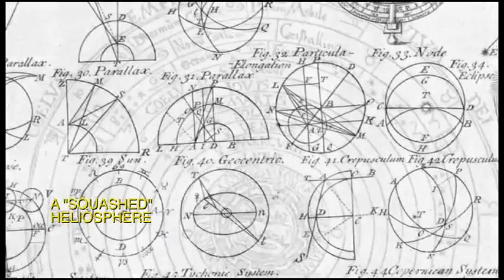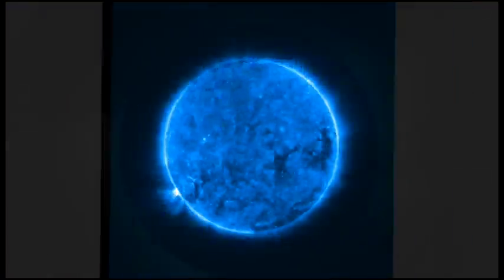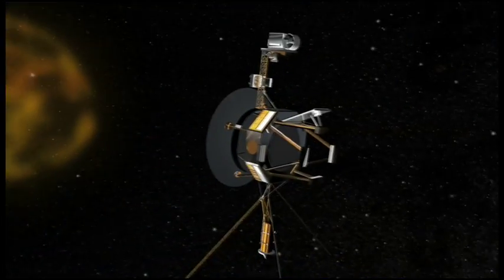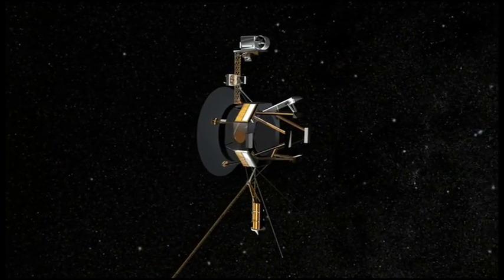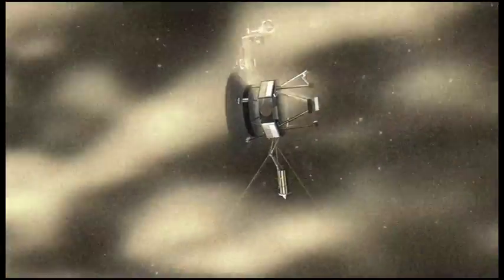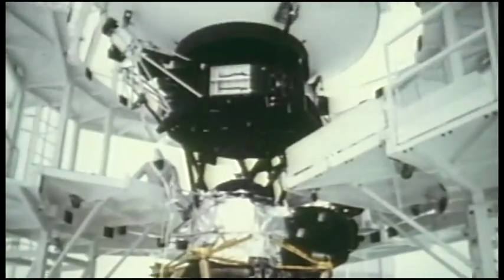Sometimes, a great discovery is a new perspective on the universe we thought we knew. As the Voyager spacecrafts near the edge of our Sun's reach, scientists are getting a new look at the expanse and shape of the solar system.